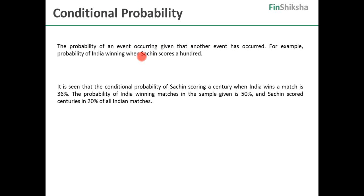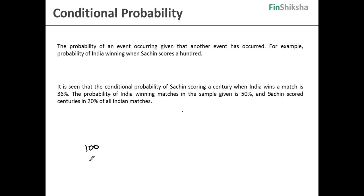Let's define a problem and try and solve that. The problem is: the conditional probability of Sachin scoring a century when India wins is 36%. The probability of India winning matches is 50%, and Sachin scores centuries in 20% of all Indian matches regardless of whether India has won or not. We now have to convert this into a tree-like structure. A tree-like structure means: what is the total sample size? Let's say 100 matches. What is the probability of India winning, India losing, Sachin scoring, and Sachin not scoring?